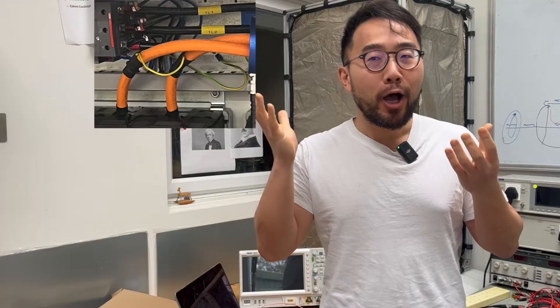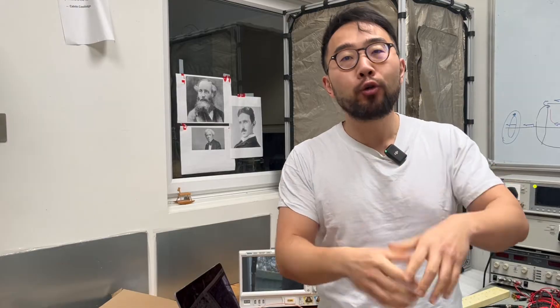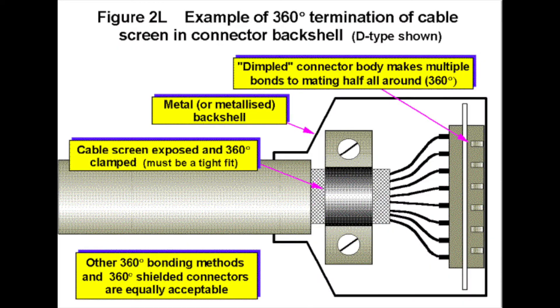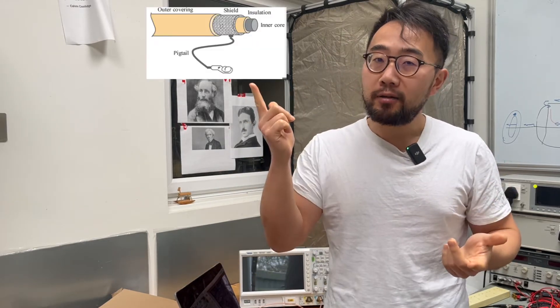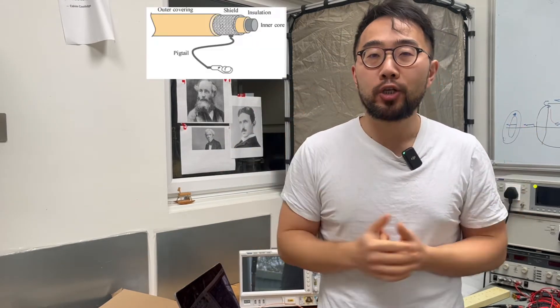Now, you may have seen this kind of single wire, what we call pigtail termination, when people connect a fully shielded cable bundle to, let's say, a cabinet. You often have two types of termination. One is what we call 360 degree termination, where the entire shield is bonded to the cabinet. Then the other type, as you can often see, is this kind of what we call pigtail termination.